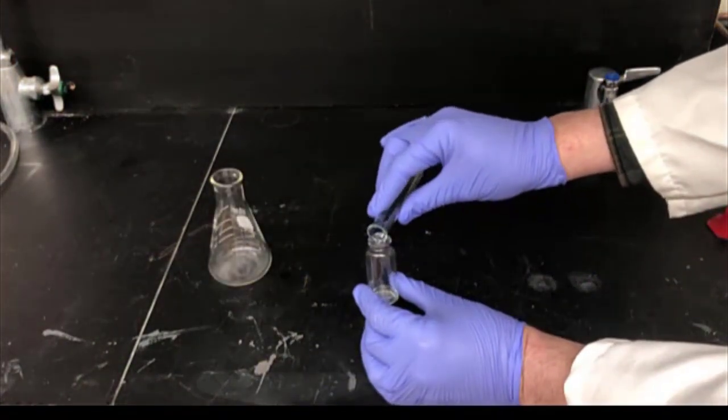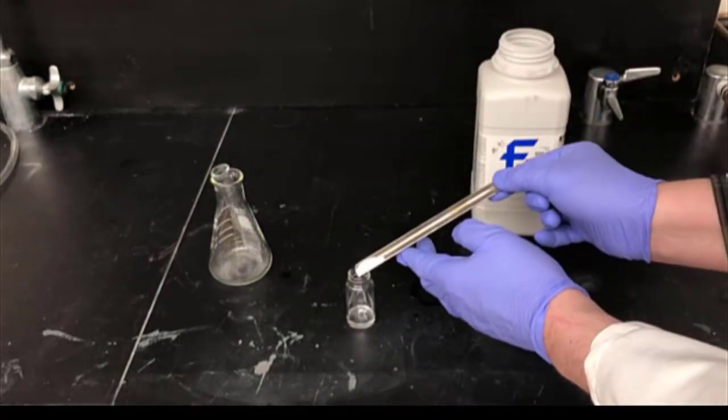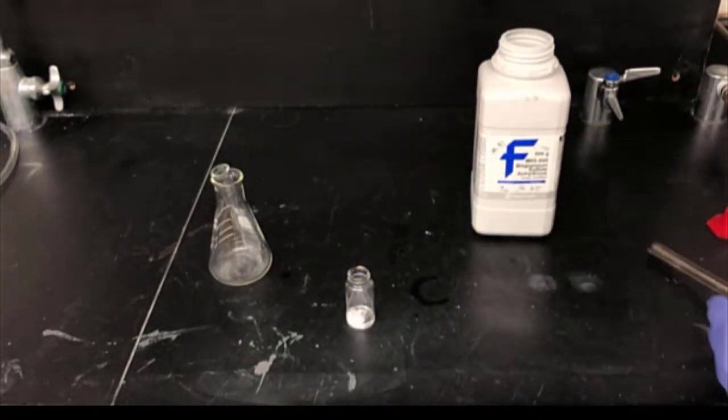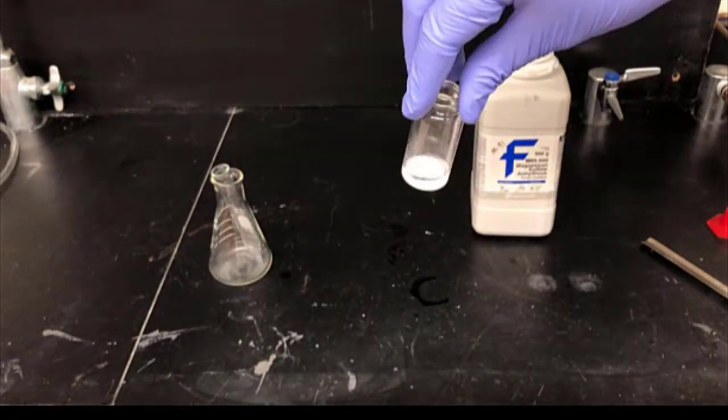Next, pour the solution into a clean dry vial. We'll dry the product mixture with magnesium sulfate. Add enough magnesium sulfate to make a thin layer on the bottom of the vial. You'll know you've added enough if you swirl it and the magnesium sulfate remains free-flowing.